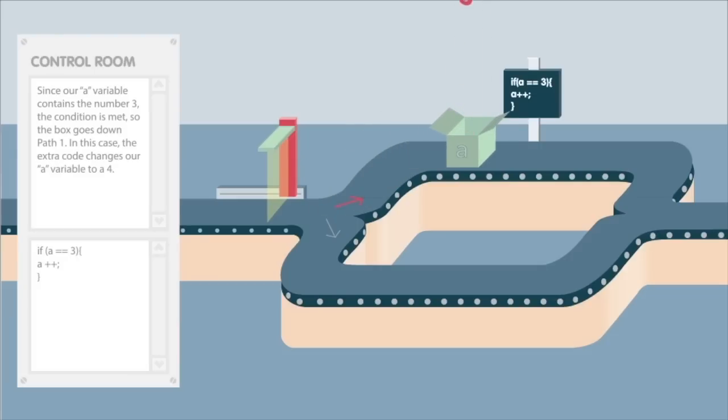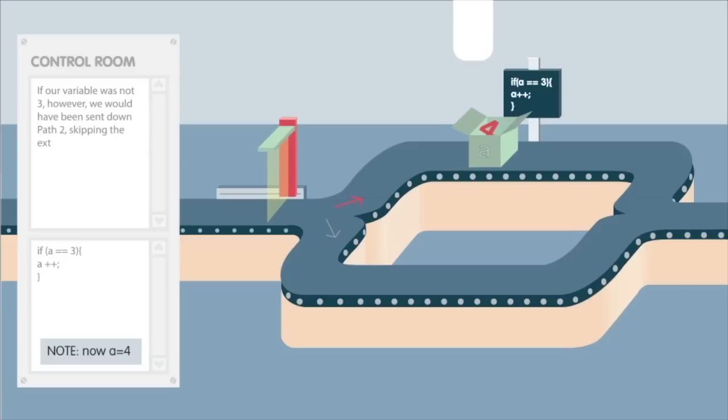In this case, the extra code changes our A variable to a 4. If our variable was not 3, however, we would have been sent down path 2, skipping the extra code entirely.